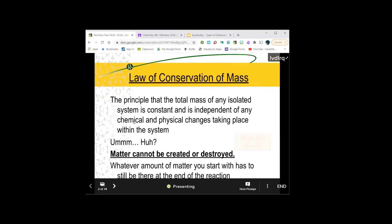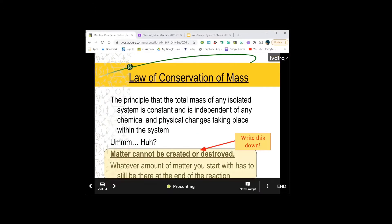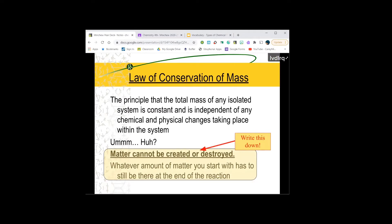The law of conservation of mass. Now the law of conservation of mass is the principle that total mass of any isolated system is constant and independent of any... I hate that definition. Every now and then scientists give these really long definitions to things that are a whole lot more simple. The law of conservation of mass says matter cannot be created or destroyed. That's it.